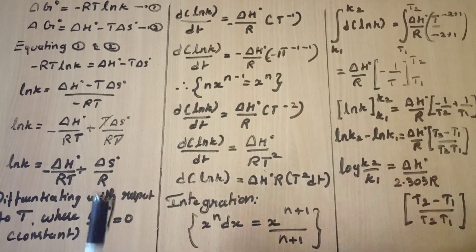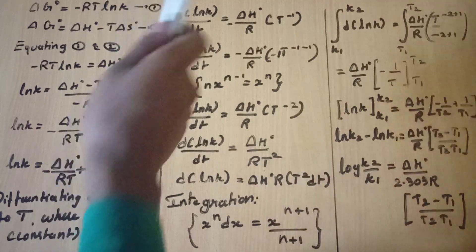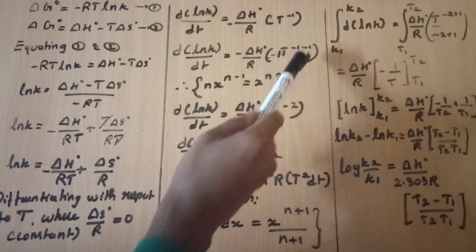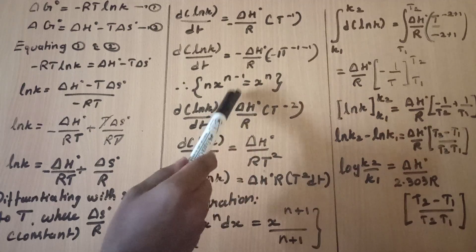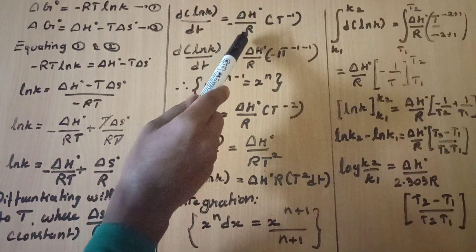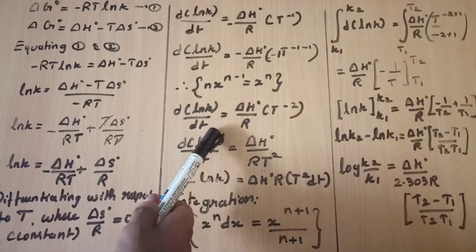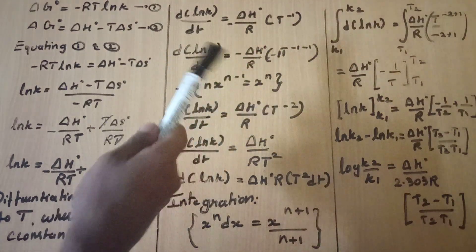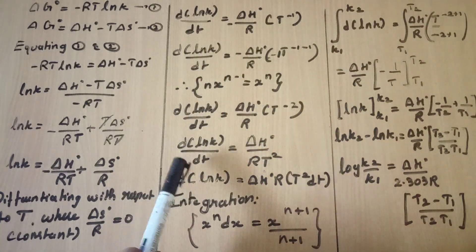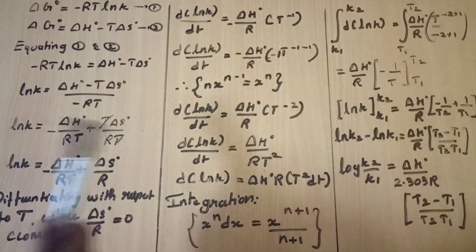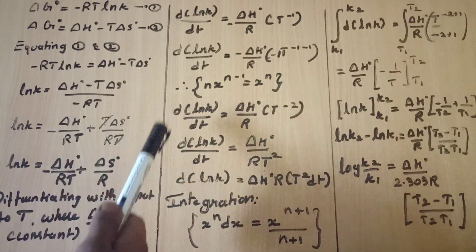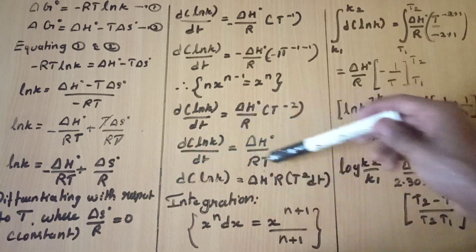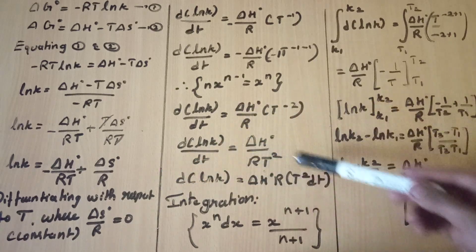We will differentiate. If we differentiate here, we have to differentiate this formula using this method. d ln K by dT is equal to S dot. This minus is minus 2. This is equal to 0, which is minus minus plus. So d ln K by dT is equal to Delta H dot by R T squared. If you look at T to the power minus 2, there is R T squared, which gives T square. This is the final differentiation answer.